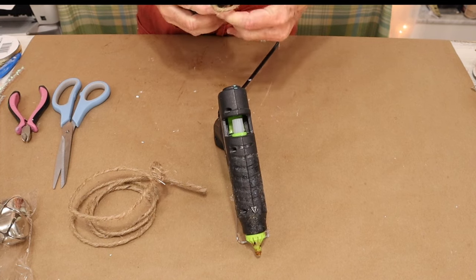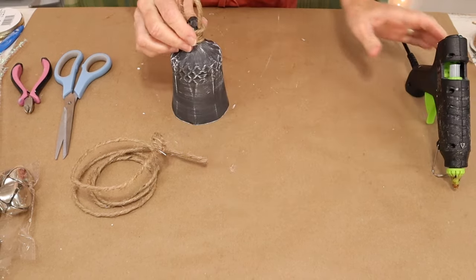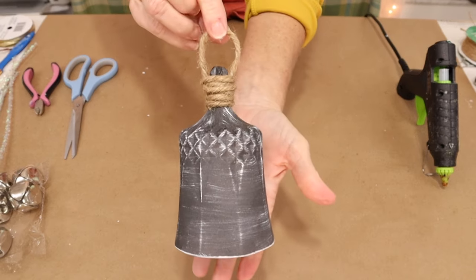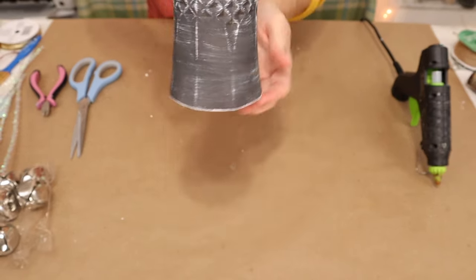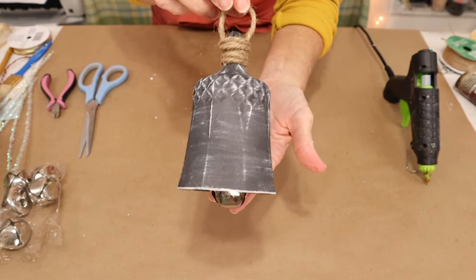And once we have our jute wire snipped and secured we're then left with this beautiful vintage bell. I think these would make perfect filler ornaments for a large tree.